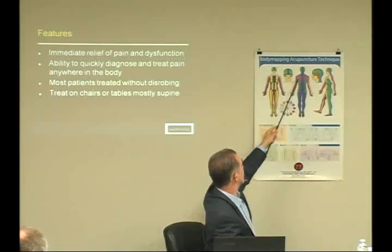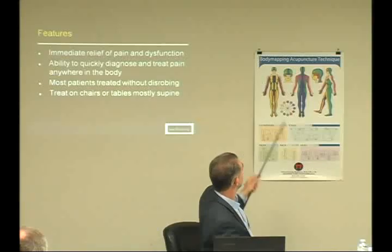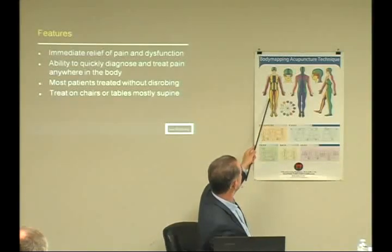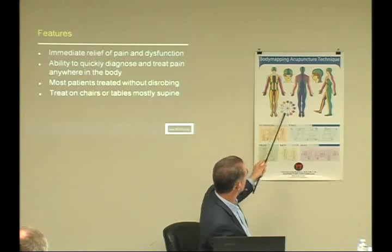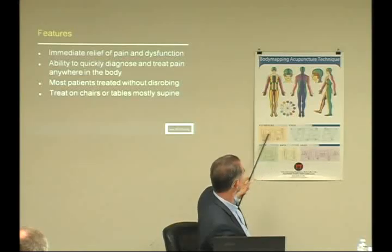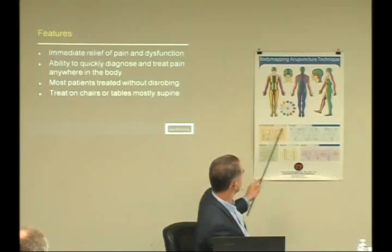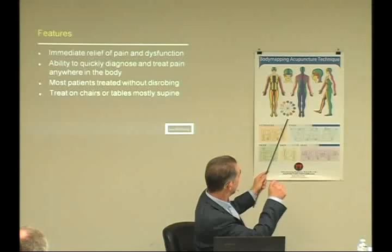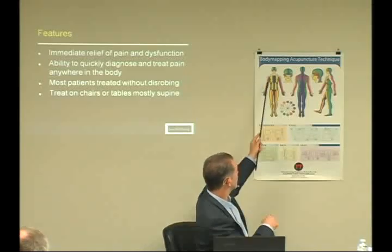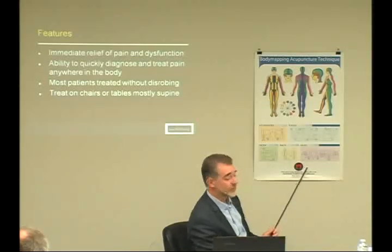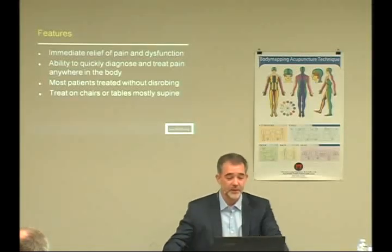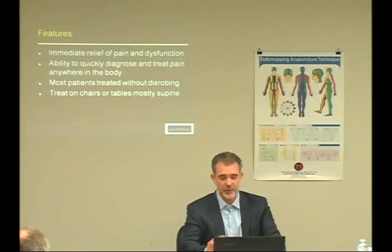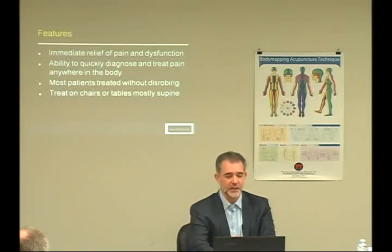Around the shoulder, for example, there are lots of different channels. But if they can find the spot, we correlate the channels, find our location distally, palpate for tender spots, needle that, and should get an immediate change. Once you're familiar with it, you can quickly diagnose and quickly treat. There's not a lot of confusion about which channel to pick.